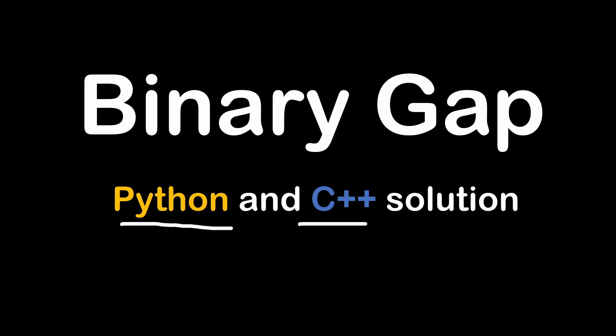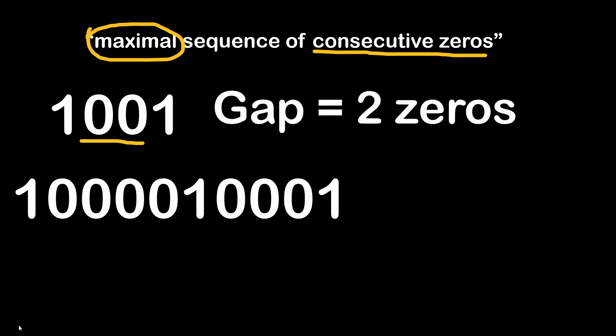So let's start with our first problem, the binary gap counter. As explained in the description of the problem that you can find on Codality website, we have to find the maximal sequence of consecutive zeros in any binary number. So for example, this number here has a gap of two zeros while this one has two gaps and the largest gap is the one with four zeros.